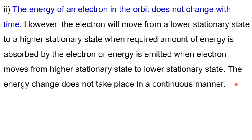The electron will move from a lower stationary state to a higher stationary state when the required amount of energy is absorbed by the electron, or energy is emitted when the electron moves from a higher stationary state to a lower stationary state. When the electron is excited, the electrons will be excited to a higher orbit.